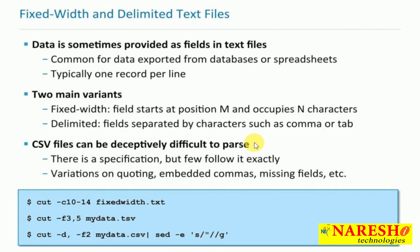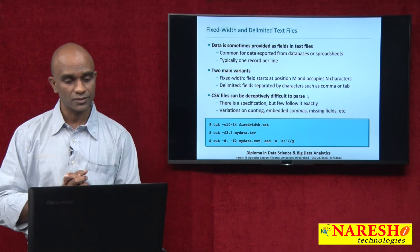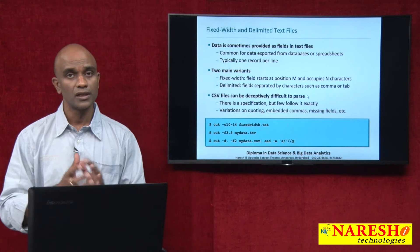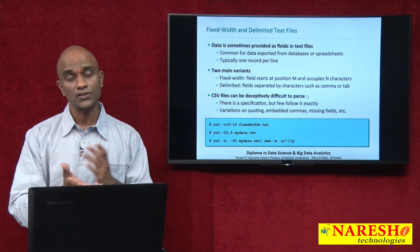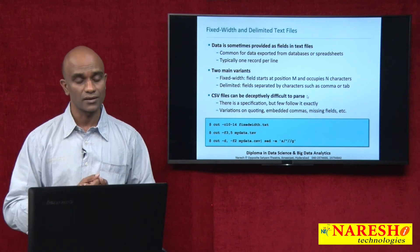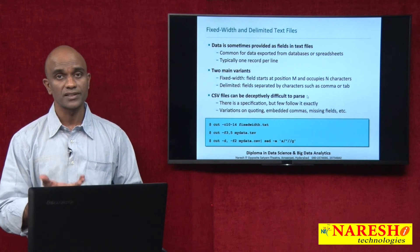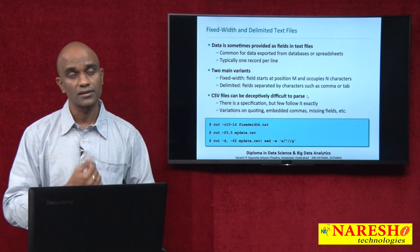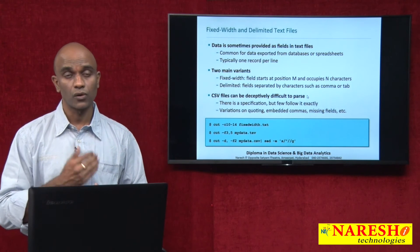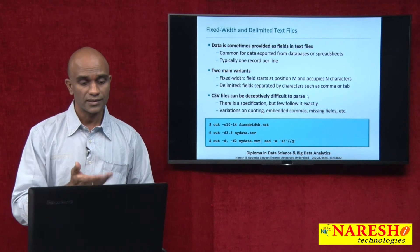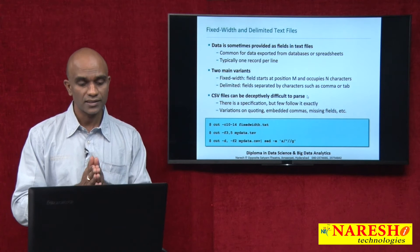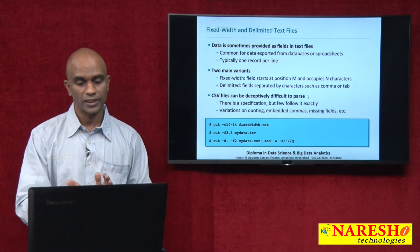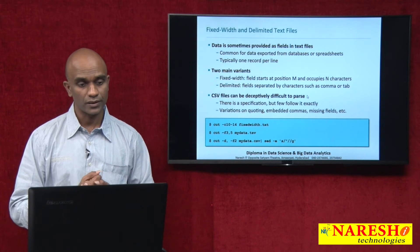CSV files can be deceptively difficult to parse. There is a specification, but few follow it exactly. In scenarios where CSVs are not following such standards, we need to be extra careful in extracting the right information. Variations on quoting, embedded commas, and missing fields are some of the issues that may or may not be followed in creating the CSV file. The cut command will extract a few columns from either a fixed width file or a CSV or tab-separated file.